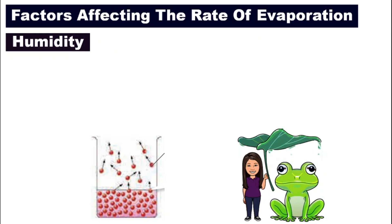What is the meaning of humidity? It is the amount of water vapor in the surrounding air. For example, in Malaysia the air has high humidity, meaning the air is actually very wet. If the air is wet or dry, that is humidity.